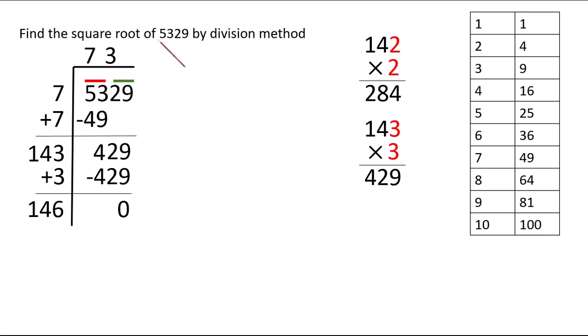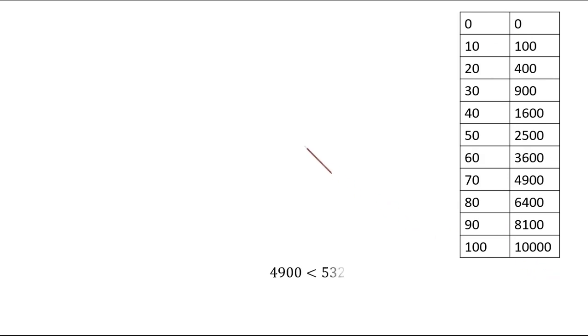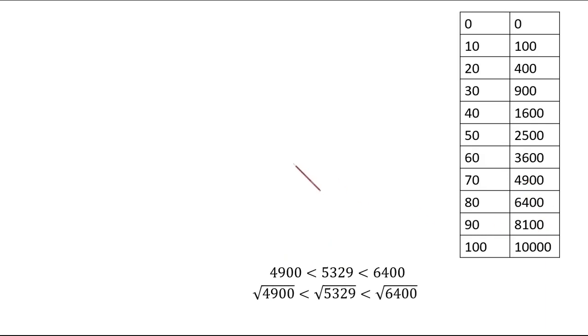To understand this, we start with the example 5329 whose square root is 73. From a table — 0² = 0, 10² = 100, all the way up to 100² = 10,000 — we know that 5329 lies between 4900 and 6400, which are two perfect squares. Taking square roots on both sides, we find that the square root of 5329 lies between 70 and 80.